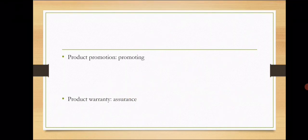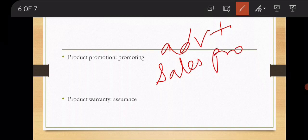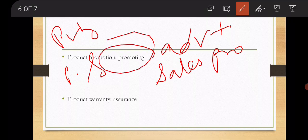Next is product promotion. अब पूरा product pricing कर लिया, product का design कर लिया, product mix, packaging, और labeling — तो अब उसको promote कैसे करना है. Exporter promotional activities करेगा ताकि product market में आसानी से बिक जाए. Promotion will include advertising, sales promotion, personal selling, publicity, and sponsorships — यह सब product promotion है.